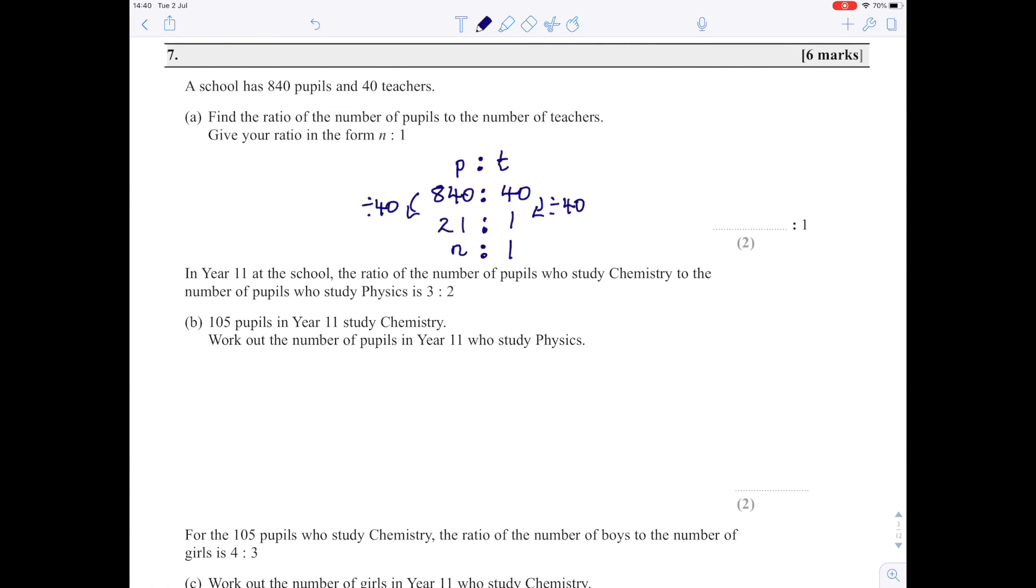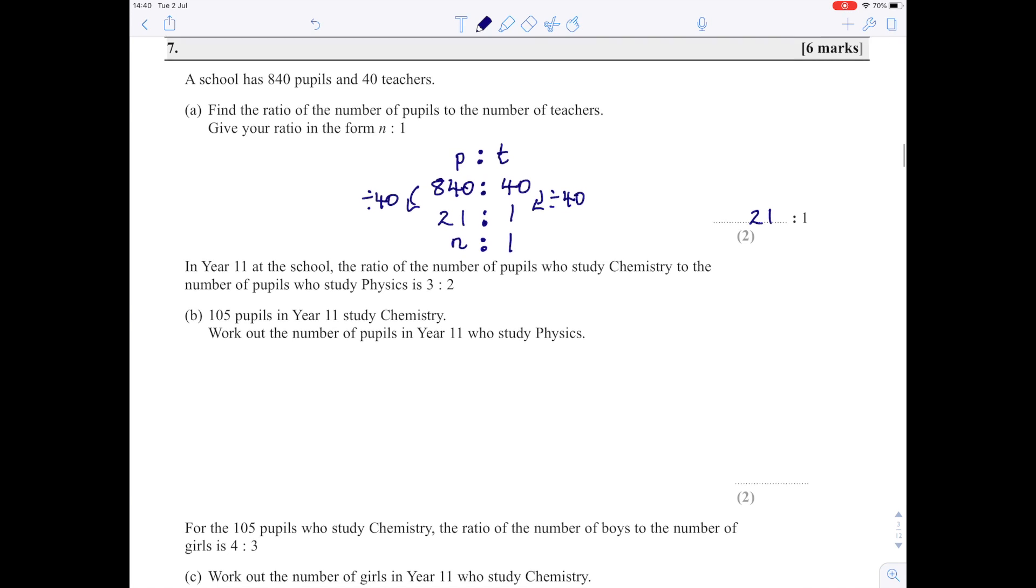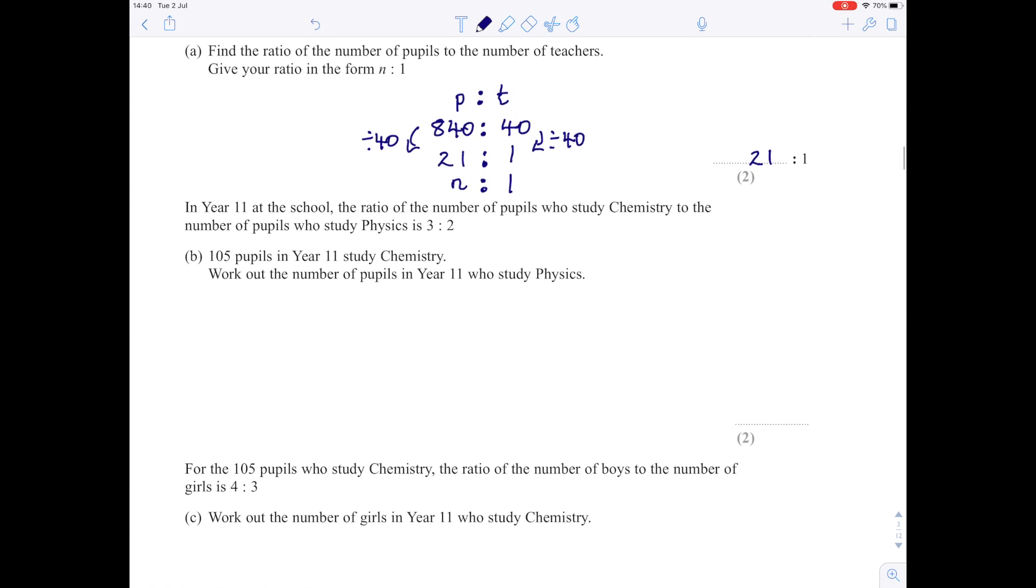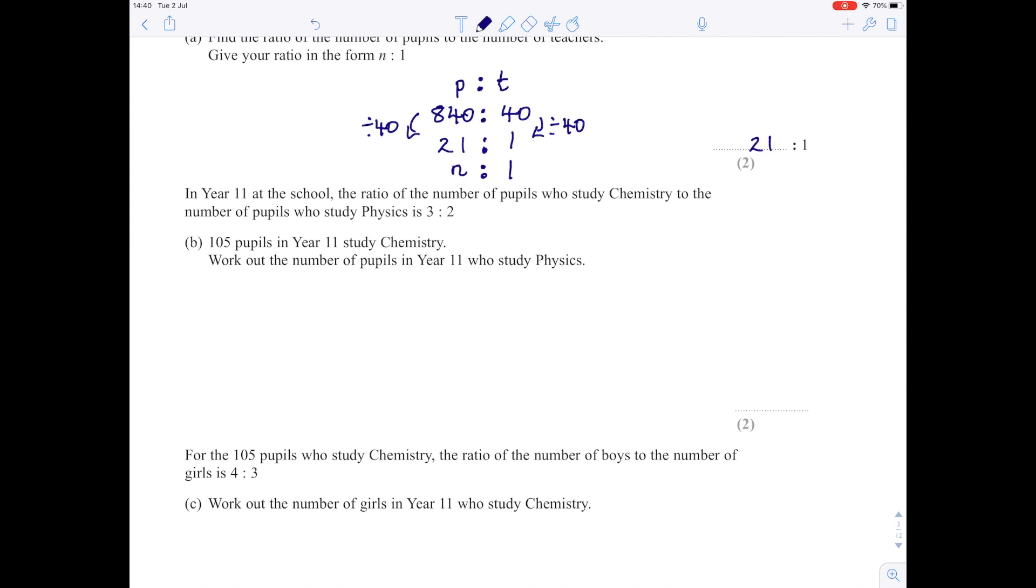In Year 11, the ratio of pupils who study Chemistry to pupils who study Physics is 3 to 2. In Year 11, 105 study Chemistry, and we want to find out how many pupils study Physics.